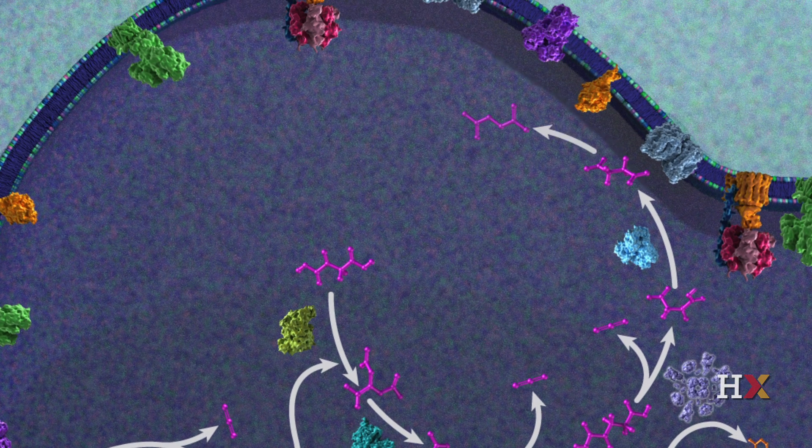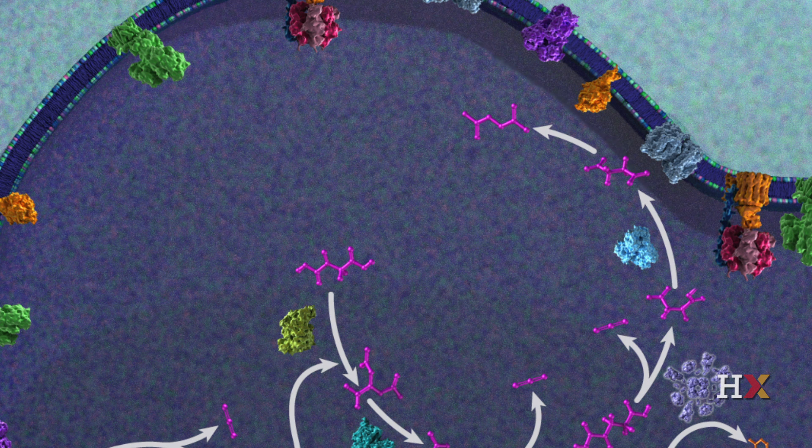In the sixth step, succinate is oxidized to fumarate by succinate dehydrogenase. Unlike all the other enzymes in the citric acid cycle, succinate dehydrogenase is embedded in the inner mitochondrial membrane and is also a component of the electron transport chain in which it is also called complex II.